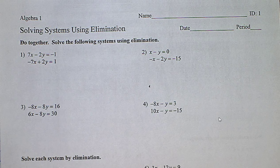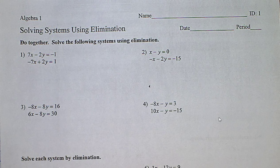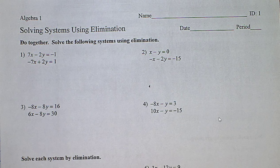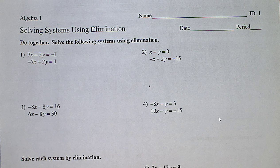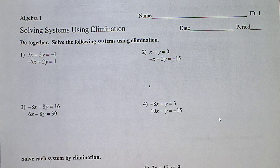If the variables go away and you're left with something true like 0 equal to 0, then it's infinitely many solutions. If you're left with something false like 0 equal to 7, then it's no solutions. That's only if the variables go away and you have 0 x's — that's not the same as if x is equal to 0. x equal to 0 is fine; 0 is a number.